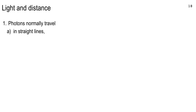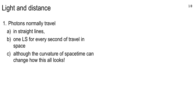Photons normally travel in straight lines. If there's no great amount of matter nearby, spacetime is flat: every second of travel gets another light second of distance on straight lines. Curvature of spacetime can change how that looks, and is affected by the presence of matter. The sun has a lot of mass, and we can measure the gravitational curvature near the sun — it's pretty weak, but we can measure it. That was one of the very first verifications of the theory of relativity.